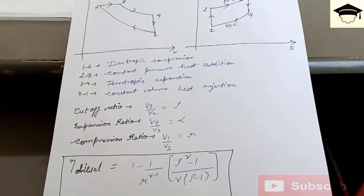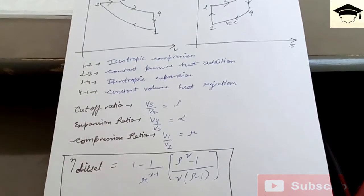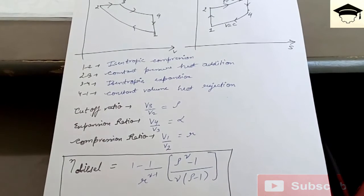So you can easily find the efficiency of the diesel cycle if you know the compression ratio and the cutoff ratio.